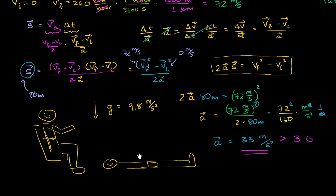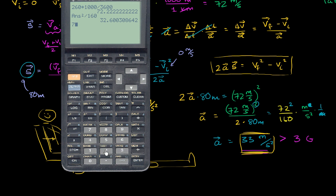The other question is: how long does it take to be catapulted off the carrier? If accelerating at 33 m/s², after one second you'd be going 33 m/s, after two seconds 66 m/s — so it takes a little more than two seconds. Specifically, 72 ÷ 33 ≈ 2.18 seconds to be catapulted off the carrier.